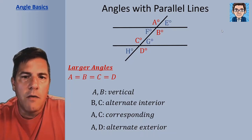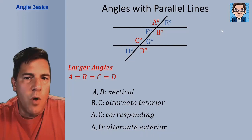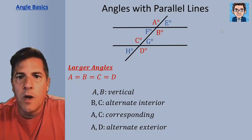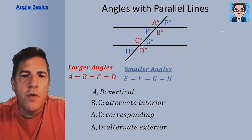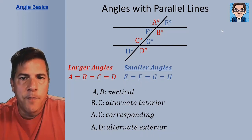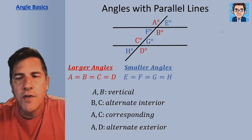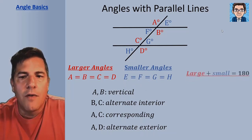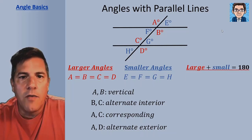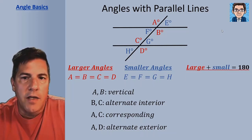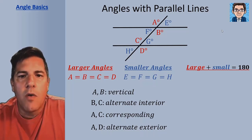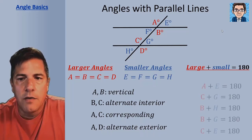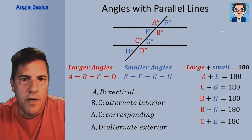Similarly, we've got four angles that are smaller than 90 degrees — labeled E, F, G, and H — and those are all going to be equal to each other. And any combination of a large and a small angle is going to give us 180. So if I take any of the larger angles A, B, C, or D and add it to any of the small angles E, F, G, or H, I'm going to get 180 degrees.